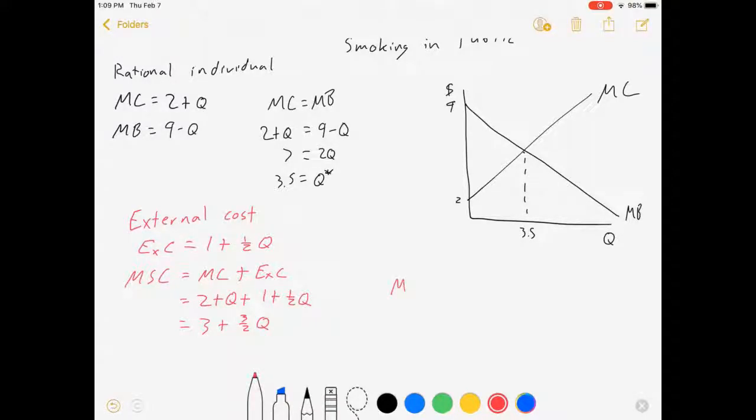So for a rational society, you would want to equilibrate marginal social cost equal to marginal benefit. 3 plus 3 half Q equals 9 minus Q. Let's see, that's going to be 5 halves Q equals 12. Oops, sorry, no.